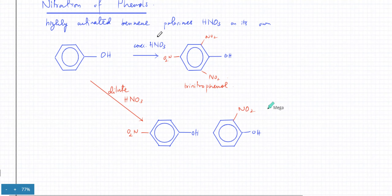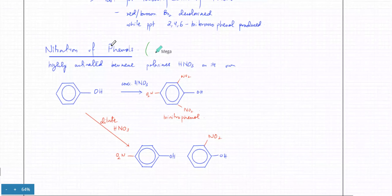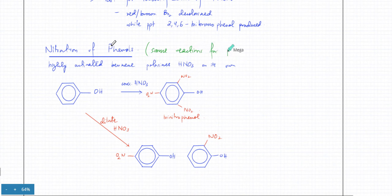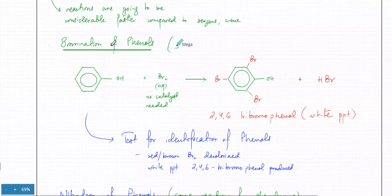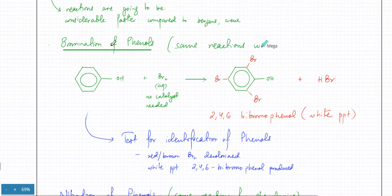You still don't need a catalyst, just like in bromination of phenols. And for phenylamine, the reactions are going to be exactly the same — same reactions for phenylamine with both bromination and nitration.